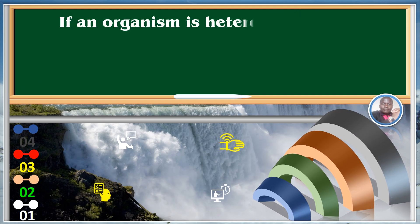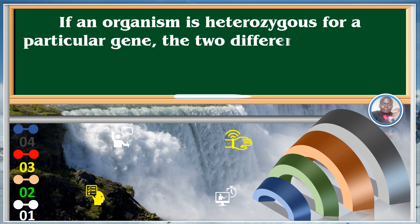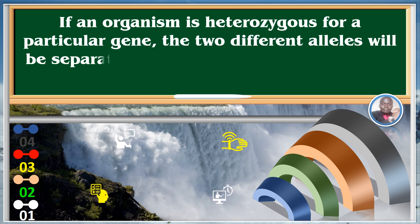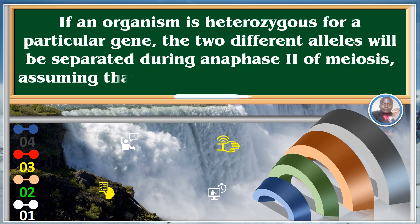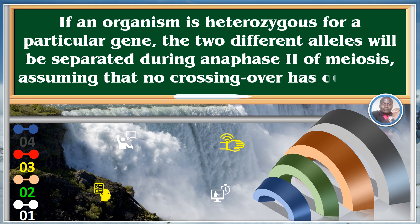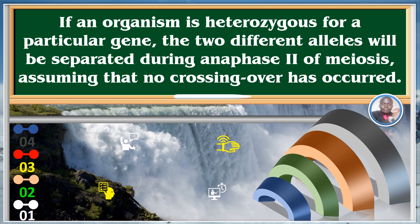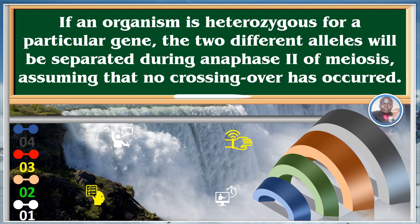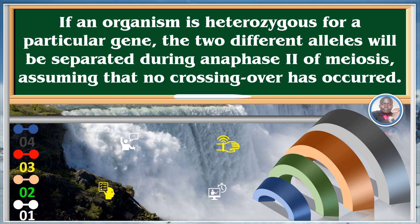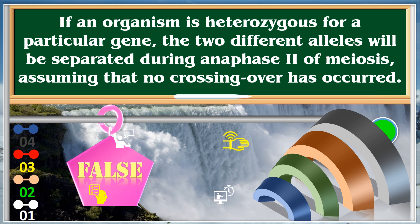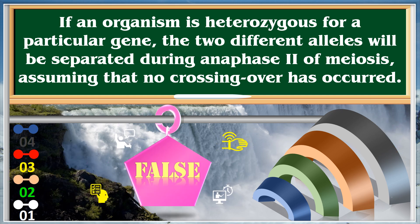If an organism is heterozygous for a particular gene, the two different alleles will be separated during anaphase II of meiosis, assuming that no crossing over has occurred. False.